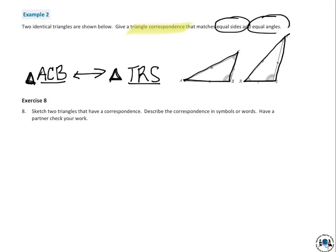So again, there are different answers. A, B, C could have been A, B, C to T, S, R, we might have had that. Or A, C, B to T, R, S. All right.